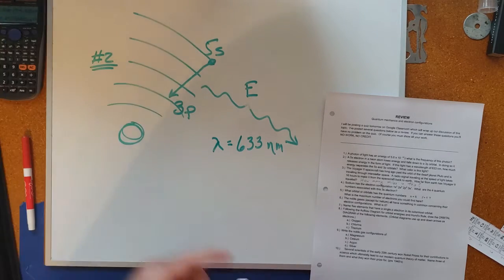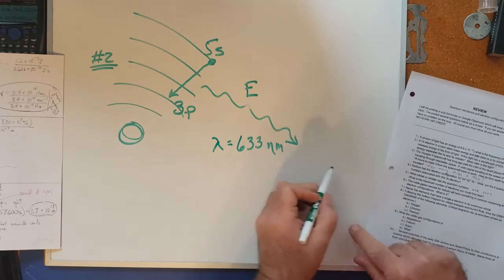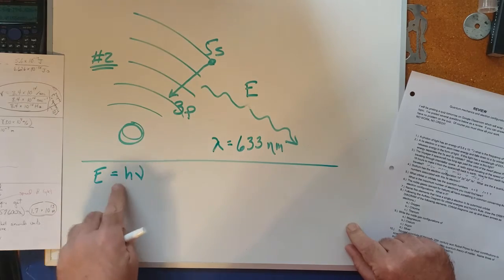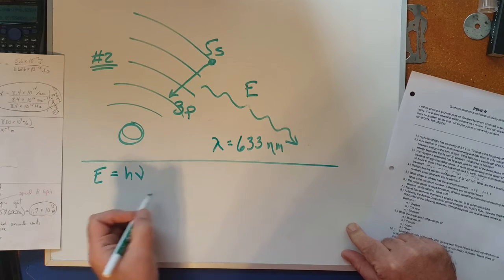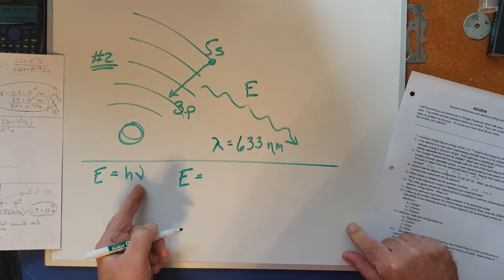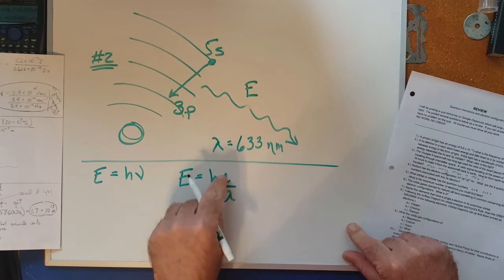Now, if you go back and look at your notes, there are several different formulas that we use for energy. One we just use in problem one, E equals h nu, that's the frequency. There is another though where we replace the frequency with c over lambda, speed of light over the wavelength.